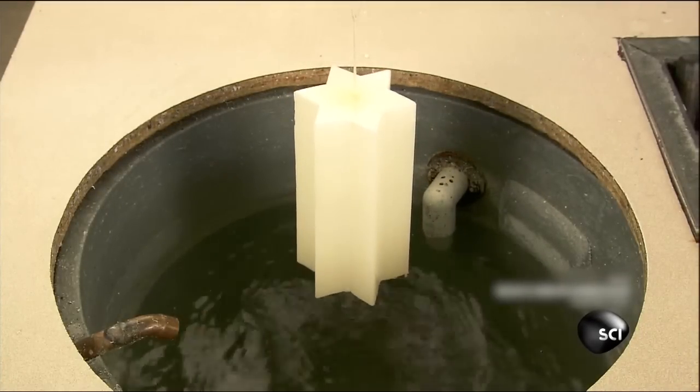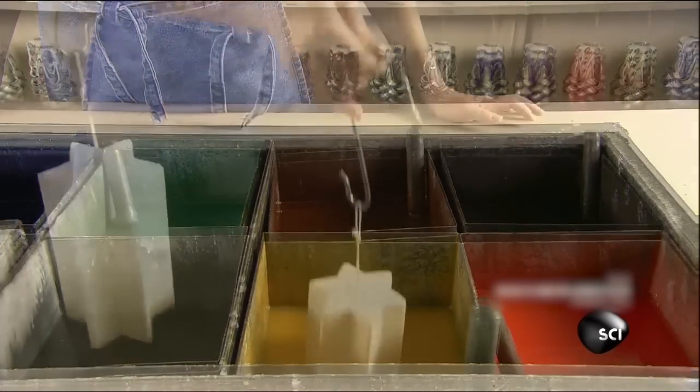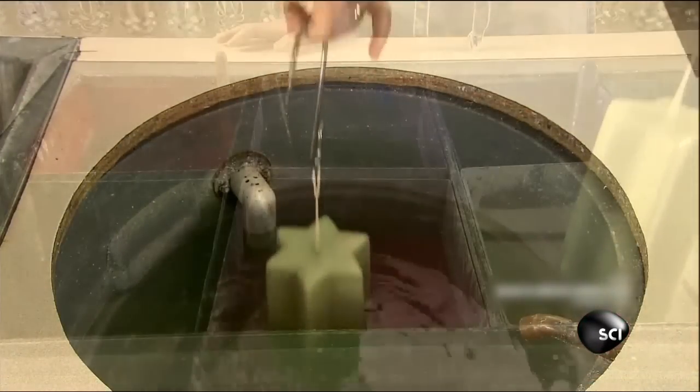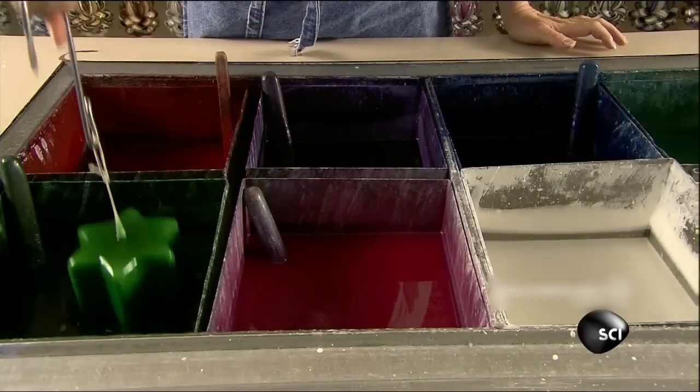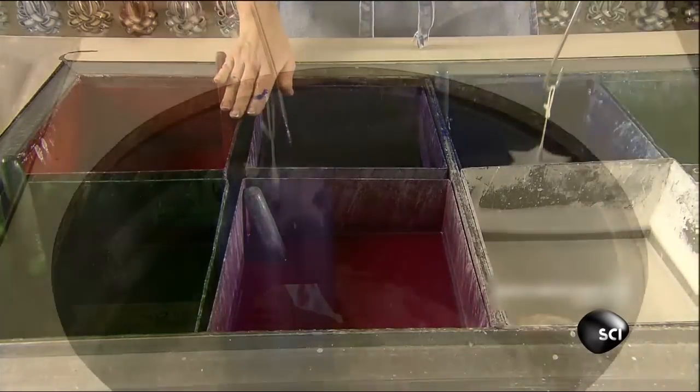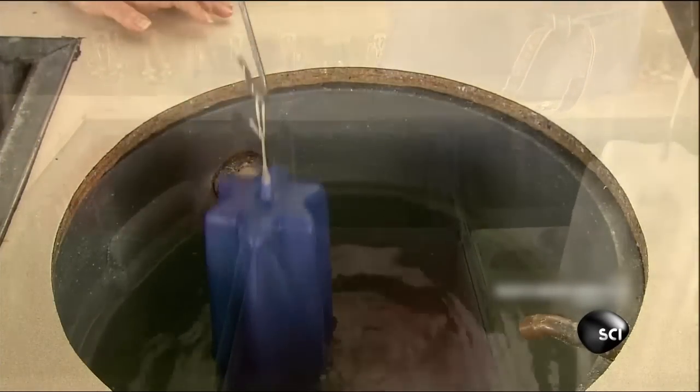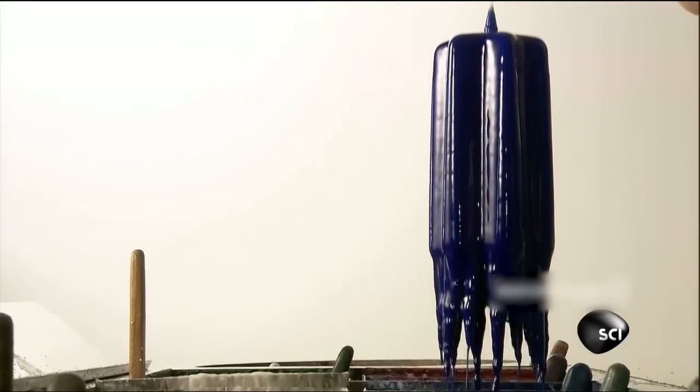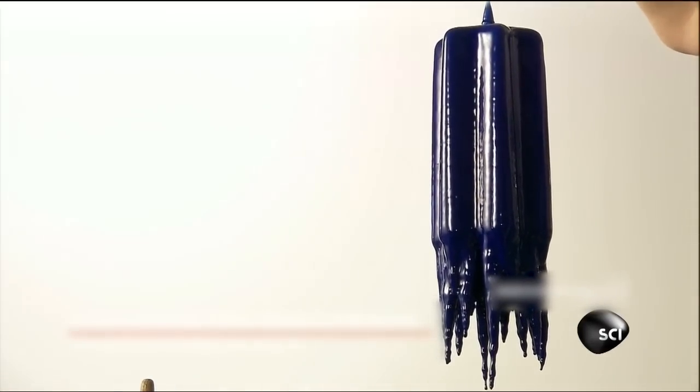The layers are hardened in cool water. She repeats this process between 30 and 35 times, building up different colored layers on the candle core. As the dipping continues, the candle becomes warmer and softer, which will allow it to be carved.